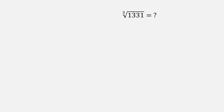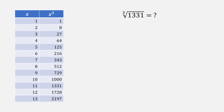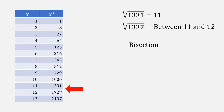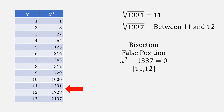Let's imagine that you're living in the 1600s or 1700s, and you want to find the cube root of 1331. The way you would do that is look up a table of cubes and scroll down until you've found 1331, which would give you an answer of 11. What if you wanted to find the cube root of 1337, which means the answer is somewhere between 11 and 12? You might use bisection or false position on this function, using the interval 11 to 12 to find the root, or use logs or some other method of approximating the solution.